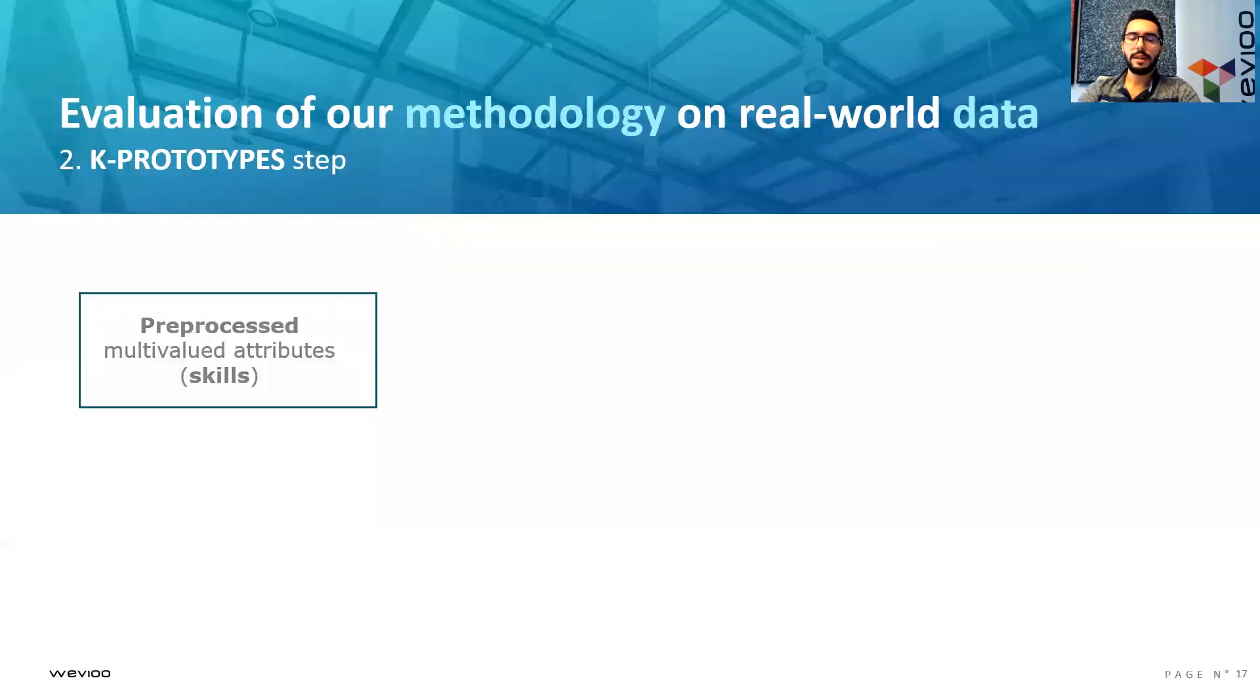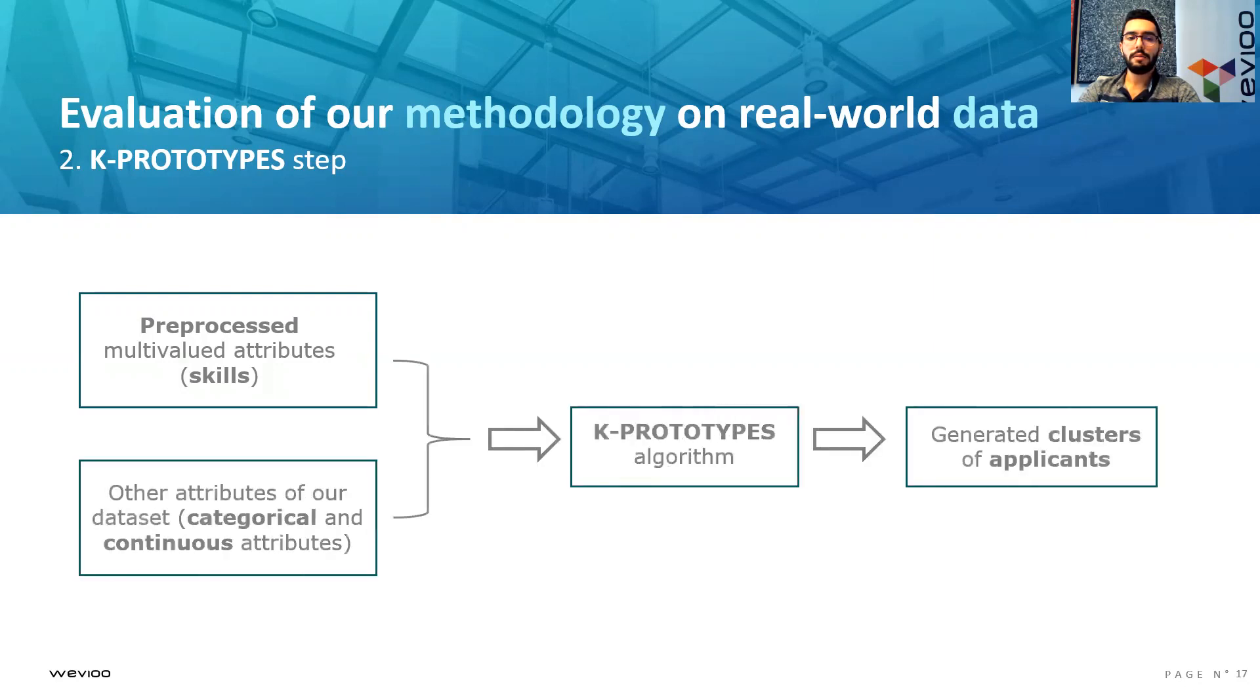Before moving to the K-prototypes step, I'd like to mention that we applied the same voting system on our multivalued skills attribute and transformed it into a single-valued one, based on the generated clusters from the K-modes step. Next, we used our preprocessed attribute, along with our categorical and continuous variables from the initial dataset, and passed them to a K-prototypes algorithm and generated clusters of applicants.